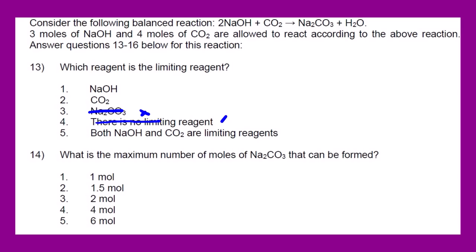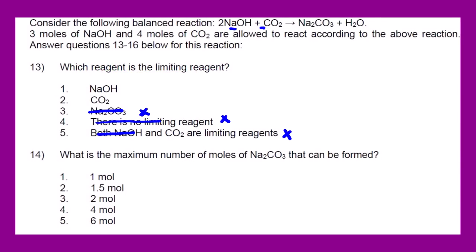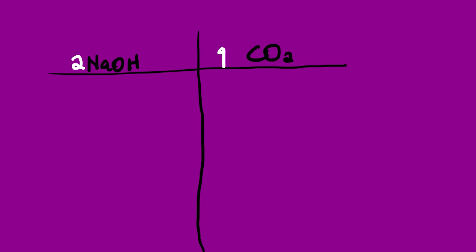So we are not going to count the products, and it is close to impossible for both sodium hydroxide and carbon dioxide to simultaneously be the limiting reagent. Normally one will be the limiting reagent and the other will be the excess reagent. I will put my first reactant here and my second reactant here. From the balanced equation we have a coefficient of 2 for NaOH and 1 for CO₂.